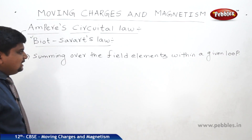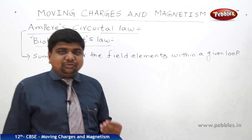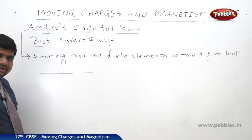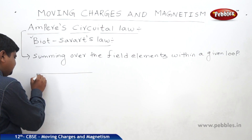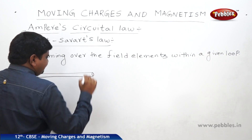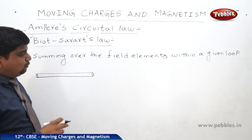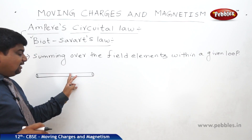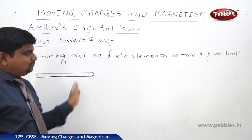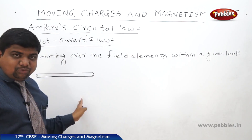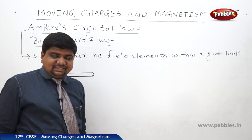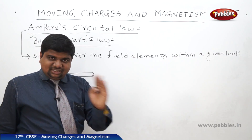For this purpose, we assume some constructions. Let us assume a current-carrying straight wire with some cross-section and length — an infinite current-carrying wire. The important point is that this current-carrying wire is emerging out of the plane. Suppose this is a page of a book or a board, and the conductor is placed such that the current emerges out of the plane.